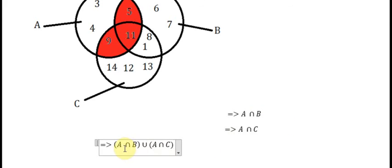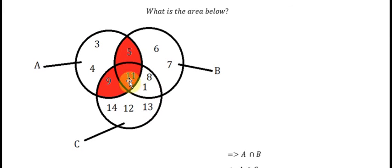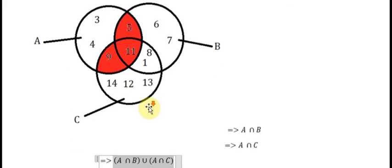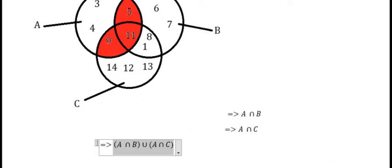This means this area union with this area, so these areas are connected together. We will have the answer: A intersection B union with A intersection C, and that's why we have this area. That's the end, thank you for watching.